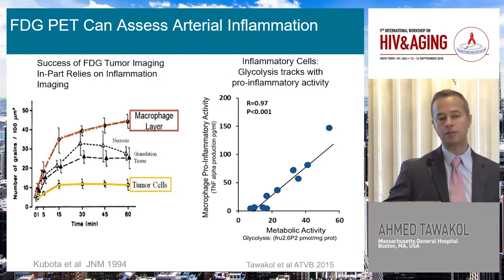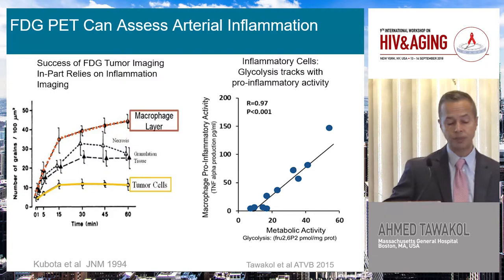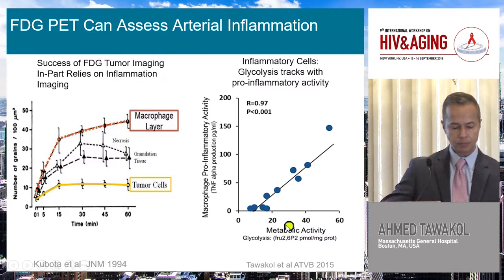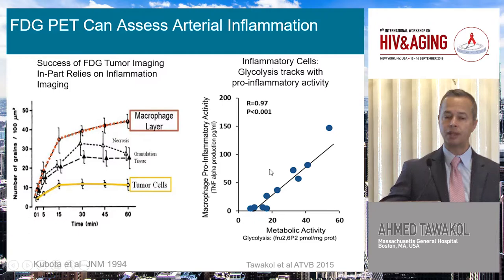All along, tumor imaging is in a way inflammation imaging. If you look at the metabolic activity of a cell — the FDG uptake — and compare it to the pro-inflammatory output of macrophages, you'll see a very tight correlation. So it's telling you not only about the number of cells, but also their metabolic activity and their pro-inflammatory potential.